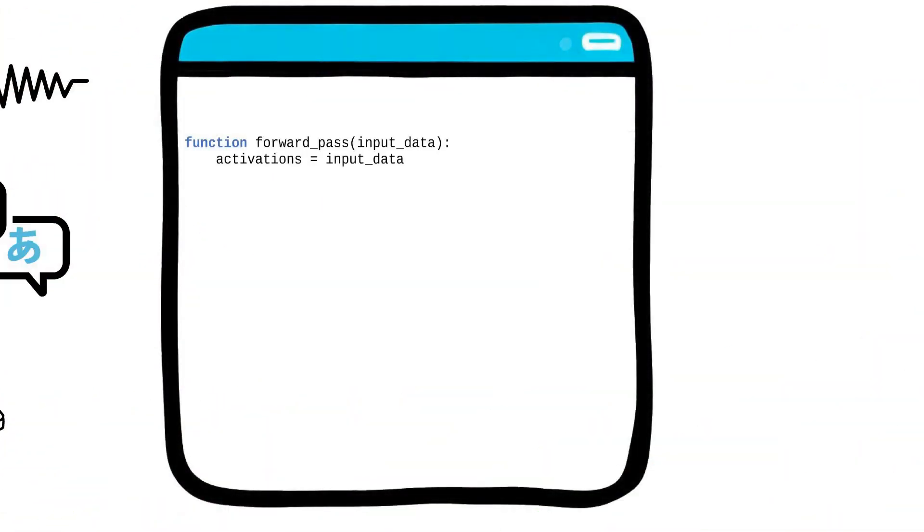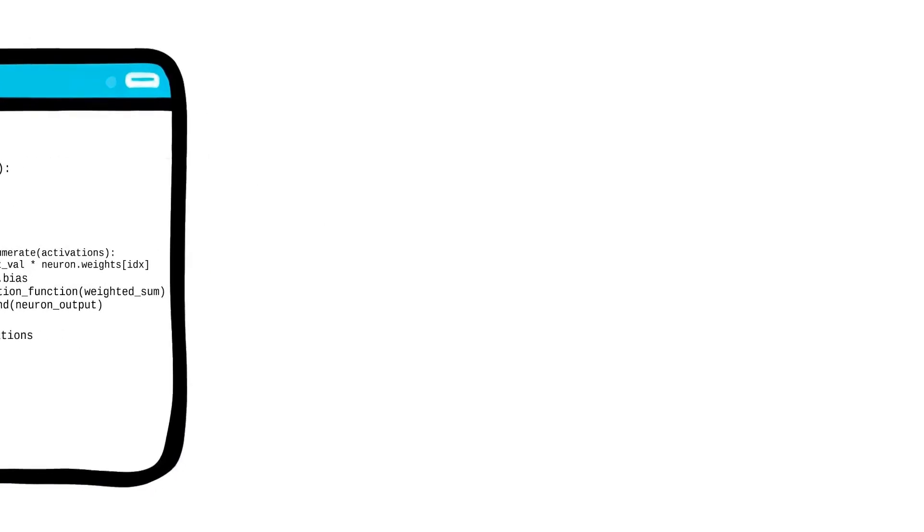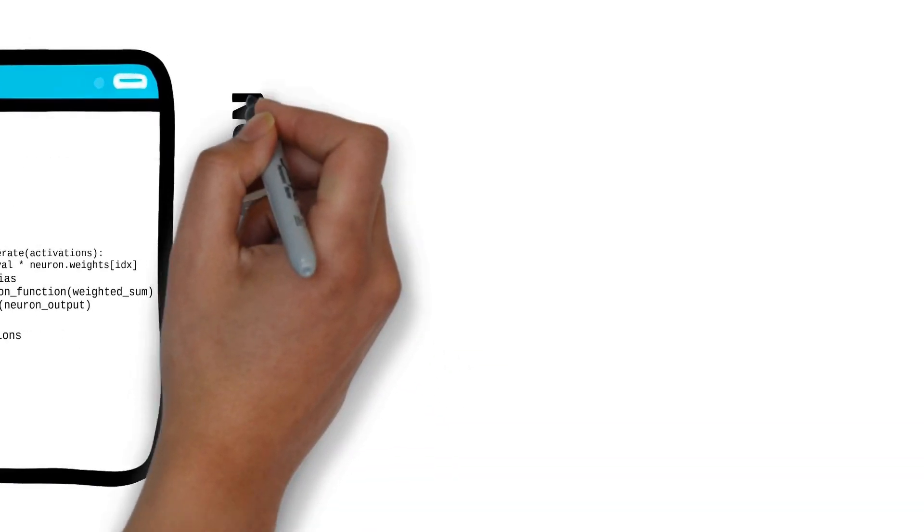Imagine having to loop through each neuron, collect its outputs, and then pass those onto the next layer. That's a lot of loops and a lot of time. Instead, we use something called vectorization.